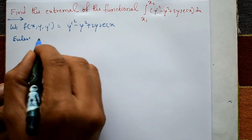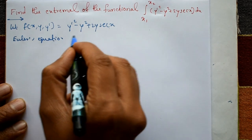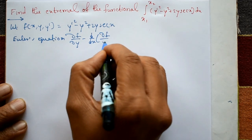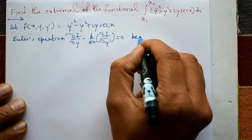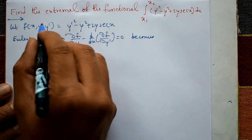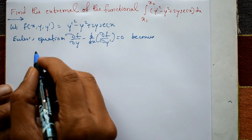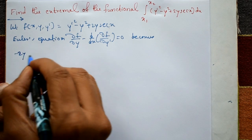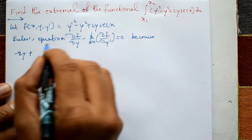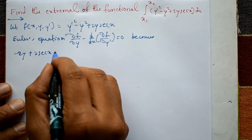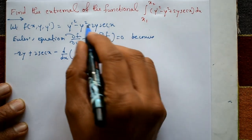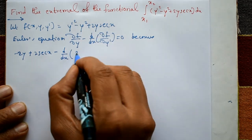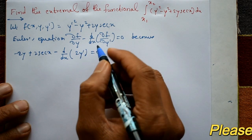Now we apply Euler's equation: ∂f/∂y - d/dx(∂f/∂y') = 0. Differentiating f with respect to y partially — treating y' and x as constants — gives: -2y + 2·sec(x). Then differentiating with respect to y' partially gives 2y'.